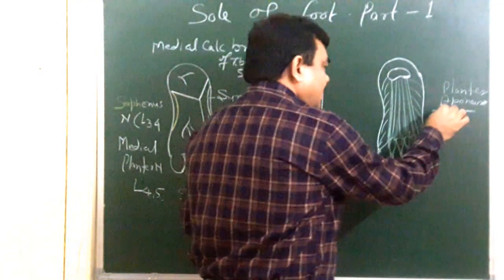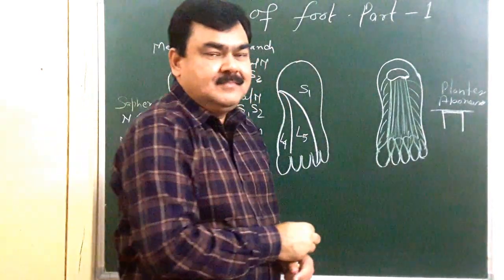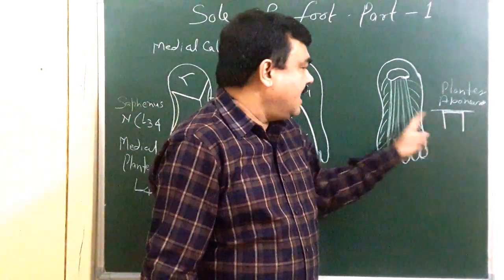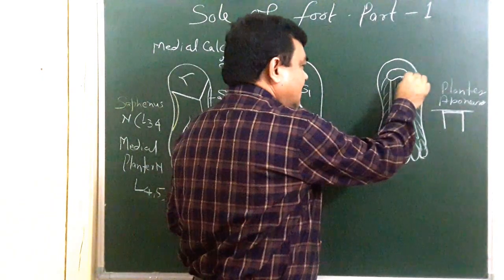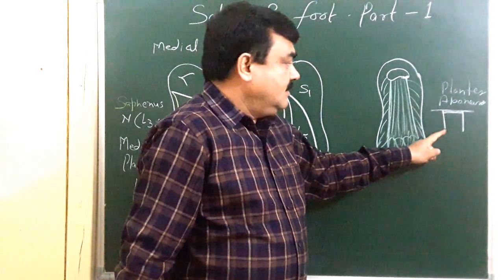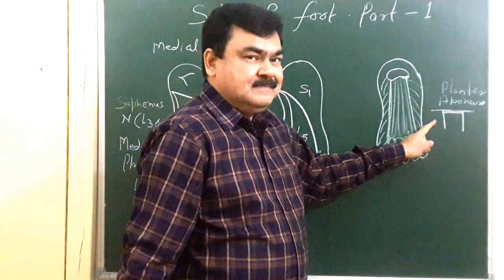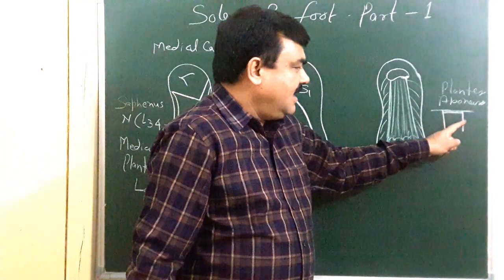And here is a septa. These are two vertical septa. One lies here on the medial side, medial margin. And one lies at the lateral margin. This septa divides the sole into medial, intermediate and lateral area.